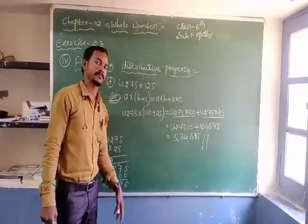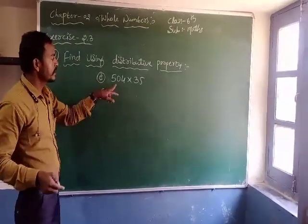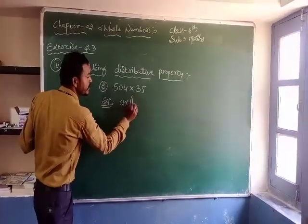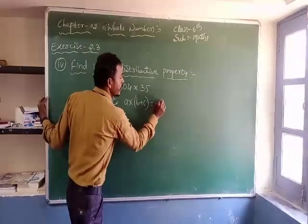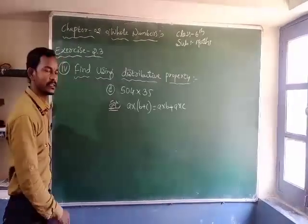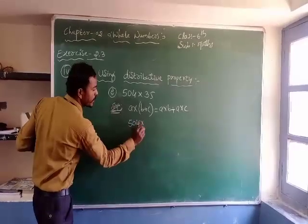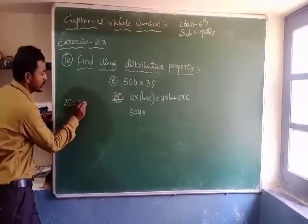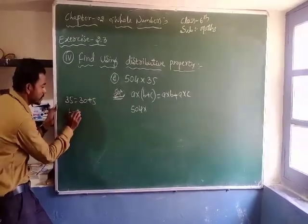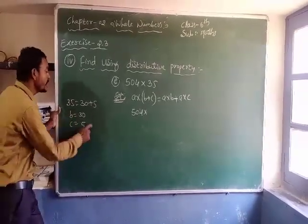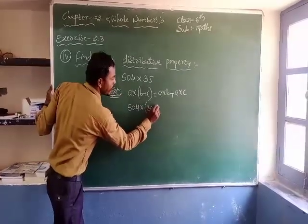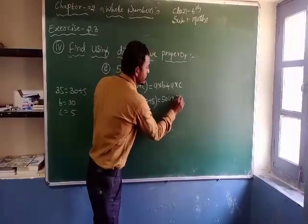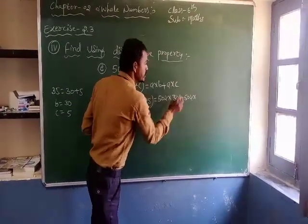So the last one is E: 504 into 35. We have to find the product of these two numbers by using distributive property. Distributive property is A into B plus C is equal to A into B plus A into C. Here, the value of A means 504. The value of B and C is 35, so I split 35 — B means 30 and C means 5. So A means 504 into B means 30, plus A means 504 into C means 5.